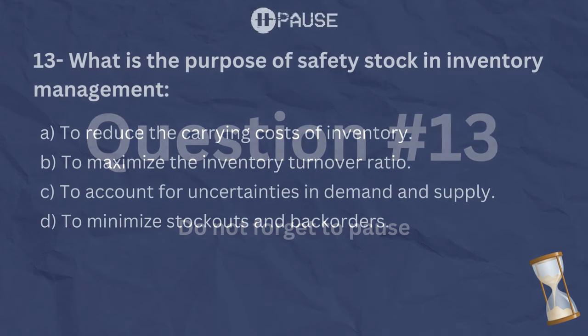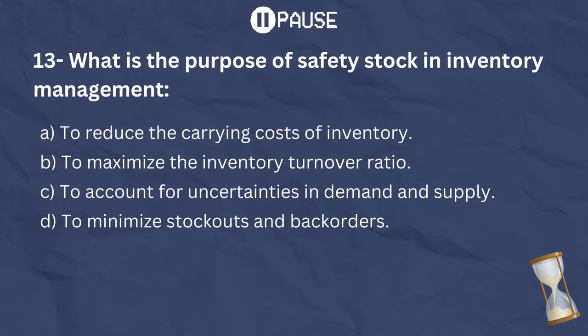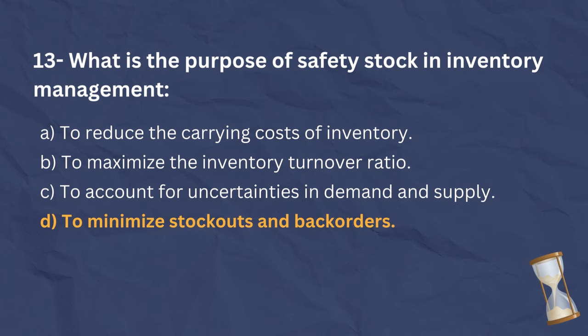The correct answer is D. Safety stock in inventory management minimizes stock-outs and back orders. Safety stock represents extra inventory held beyond expected demand to account for uncertainties in demand and supply. It acts as a buffer to ensure sufficient stock is available to meet unexpected increases in demand or delays in supply, reducing the risk of stock-outs and back orders which can negatively impact customer satisfaction and sales.